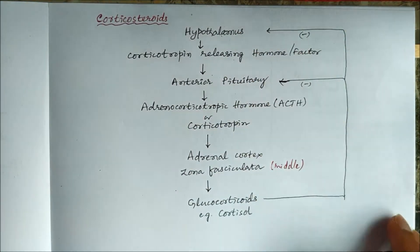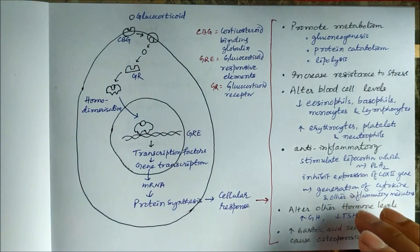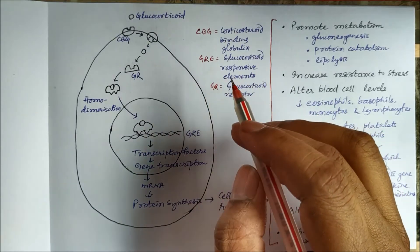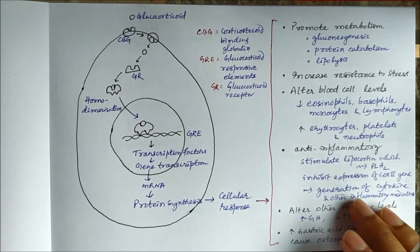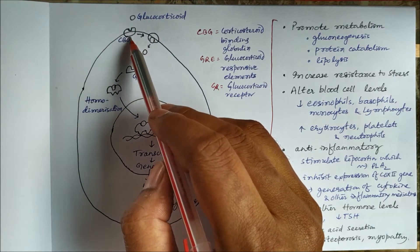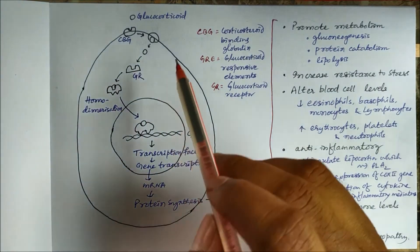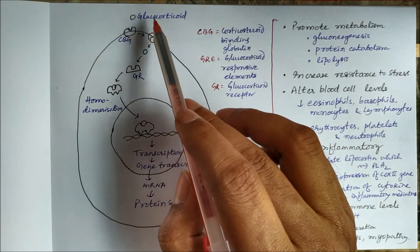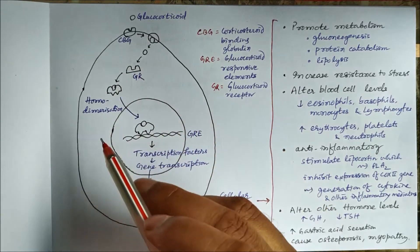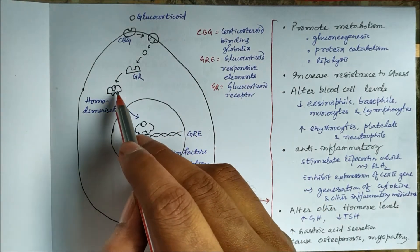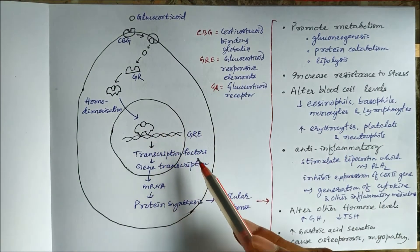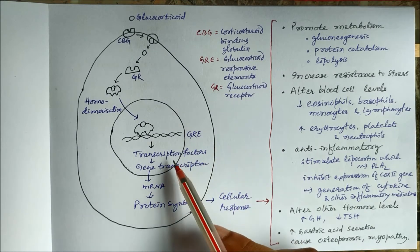When cortisol levels increase, it sends negative impulses to the anterior pituitary and hypothalamus. These glucocorticoid steroids act on the glucocorticoid receptor, which is located in the cytoplasm. The glucocorticoid first binds to a carrier called corticosteroid binding globulin, which helps its influx into the cell. Inside the cell, the glucocorticoid binds to the receptor, causing homodimerization and a change in receptor conformation.